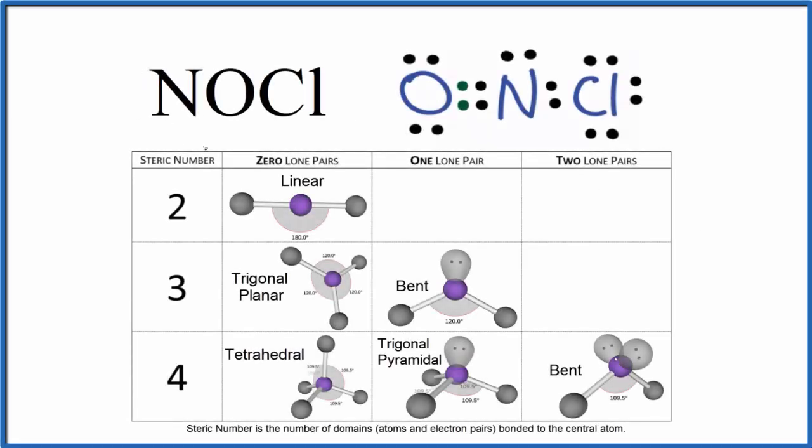In this video we'll look at the molecular geometry for NOCl. We'll start with the Lewis structure and note that for this Lewis structure the nitrogen is in the center of the Lewis structure even though it's on the end in the formula. Just something to be aware of.